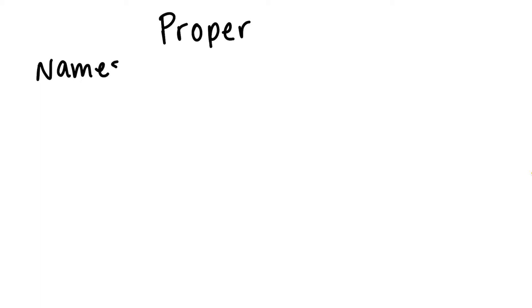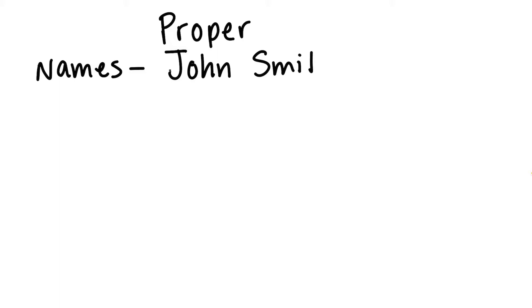We're going to go ahead and talk about proper nouns today. The first thing we're going to talk about with proper nouns is all about names. With names, the first name is capitalized and the last name is capitalized. For example, if someone's name was John Smith, the J would be capitalized and the S would be capitalized. The beginning of each letter of a name is going to be capitalized.